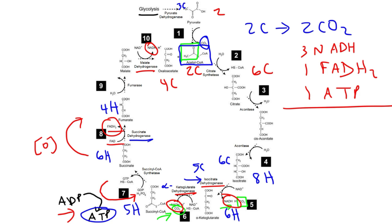We also get one FADH2, and we get one molecule of ATP. So that's for one turn of the Krebs cycle. Now, glucose will generate two pyruvate molecules, which turns into two acetyl-coenzyme A molecules.